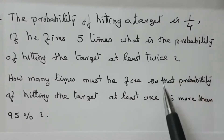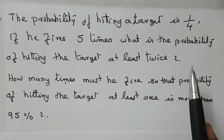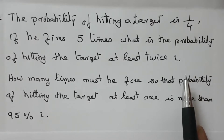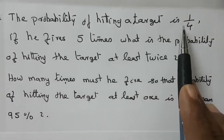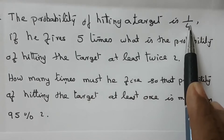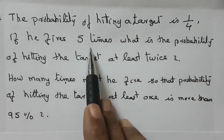For these two questions, the condition is the same. The probability of hitting a target is 1/4, and he fires 5 times. The number of fires is 5.